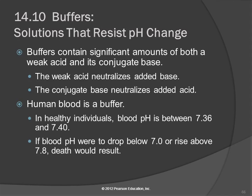Your blood pH is pretty tightly regulated between 7.36 and 7.40 — that's where you're good. If you get below 7.0 or above 7.8, you're dead. Just that small change in hydrogen ion concentration will kill you.